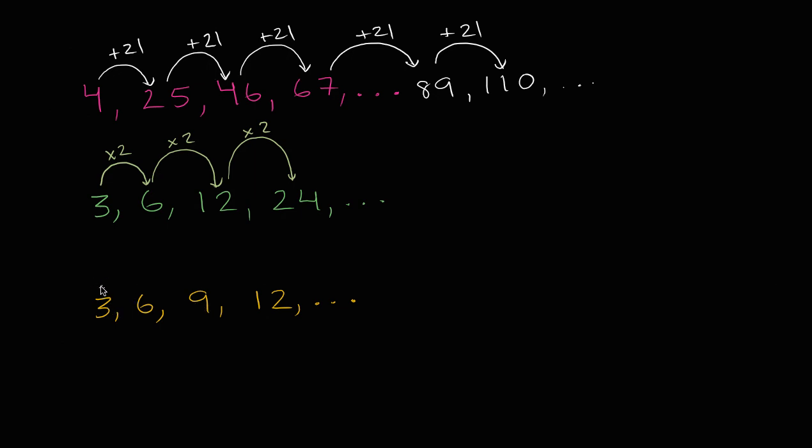But maybe I am just adding three here. So three to six, I just added three. Then six to nine, I add three again. And then nine to 12, I add three again. So this one actually does look like I'm just adding three every time.